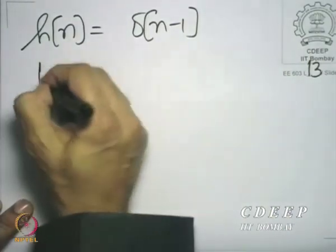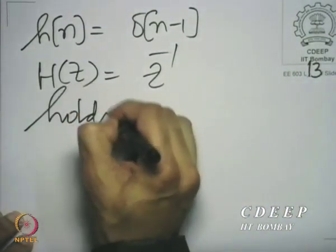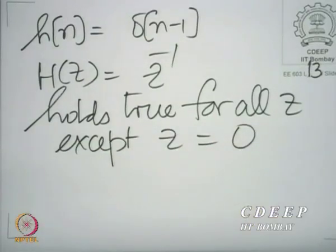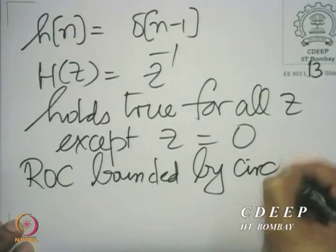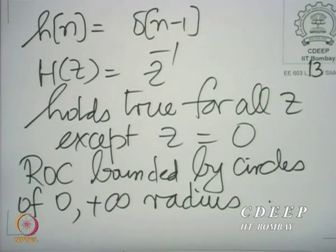Now let us take the sequence h[n] = δ[n − 1]. It is very easy to see that the z transform is z⁻¹ and it holds true for all z but z equal to 0. Again, the region of convergence is bounded by circles of 0 and infinite radius. However, the circle of radius 0 is not included in the region of convergence, whereas the circle with radius infinity is.